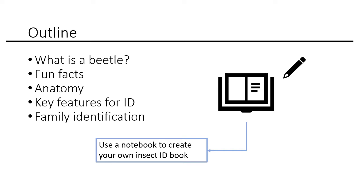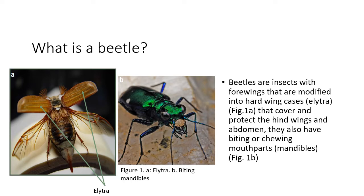You can also use it to take notes during this presentation. Feel free to pause if you want to get a better look at some of the photos or identification strategies. First off, what is a beetle? Beetles are insects with forewings that are modified into hard wing cases, called elytra. The elytra cover and protect the hind wings and abdomen, and they also have biting or chewing mouth parts.